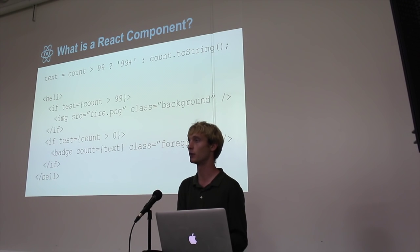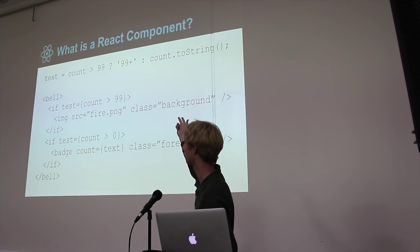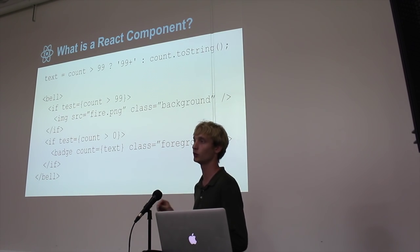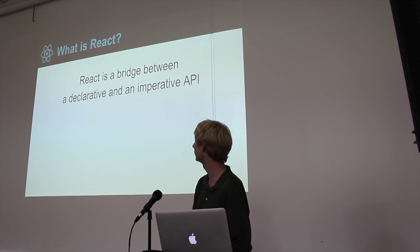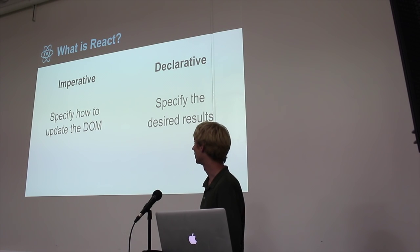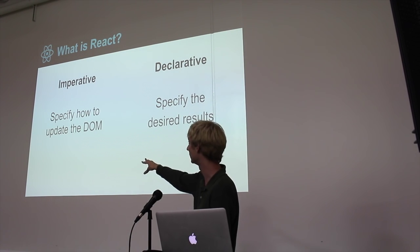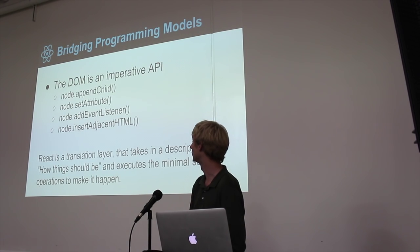The React declarative model — what we want to expose — is: if the count is greater than 99, set '99 plus,' else find a string. And then we literally just say this is the state of the world, and we rely on React to translate our declarative description into actual DOM modifications. Instead of specifying how we want to update the DOM, we specify the desired results, and React makes it happen.